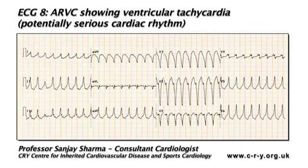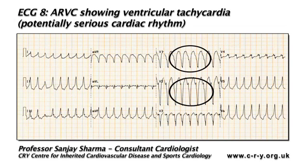This slide shows evidence of a broad complex tachycardia. A broad complex tachycardia should always be regarded as ventricular tachycardia until proven otherwise. Some of you will appreciate that this tachycardia has very negative complexes in V1 and V2, suggesting that it has a left bundle branch block morphology.